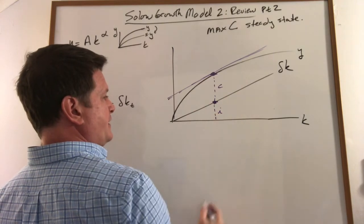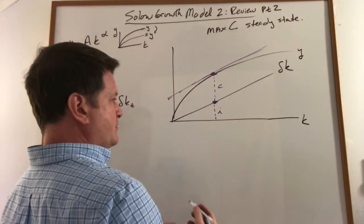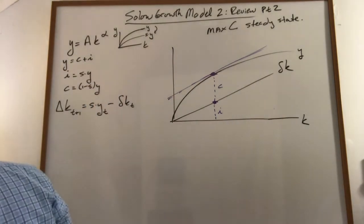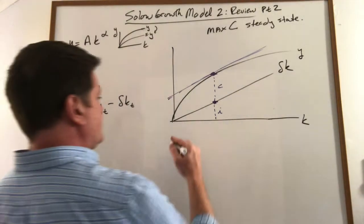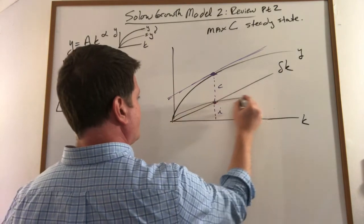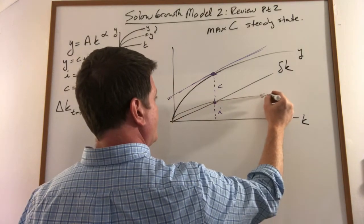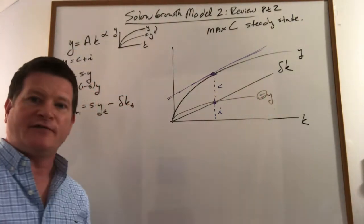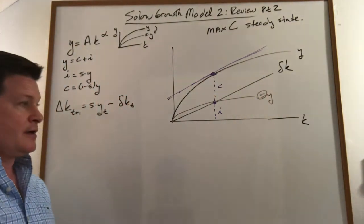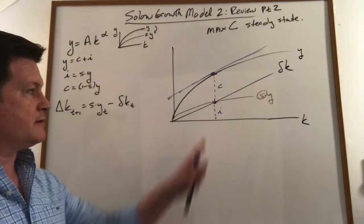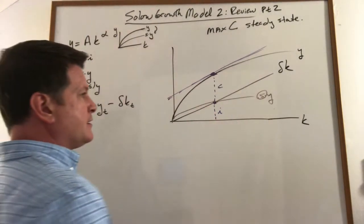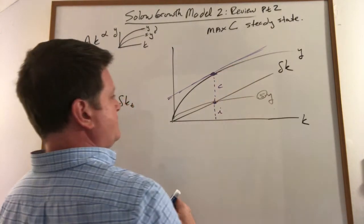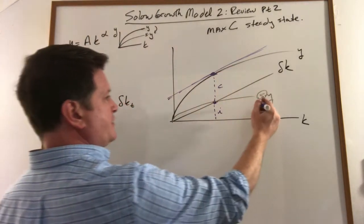So now I draw the other curve. I'll put it as another color. So I've really chosen this savings rate in order to get me to this point here. So first I maximized it here, and then I chose the savings rate that gets me there.